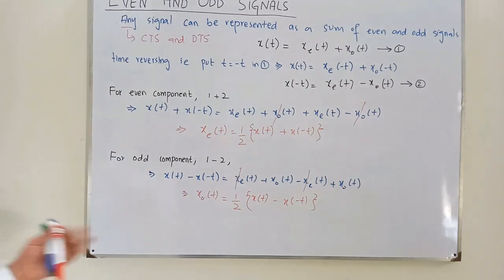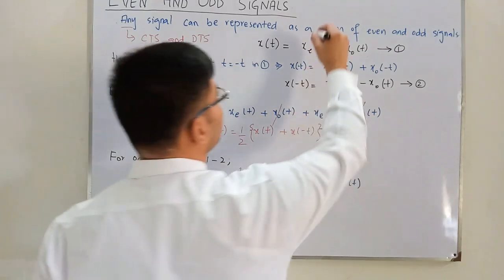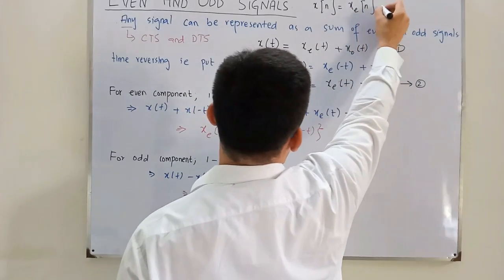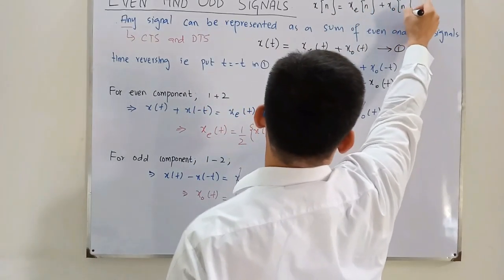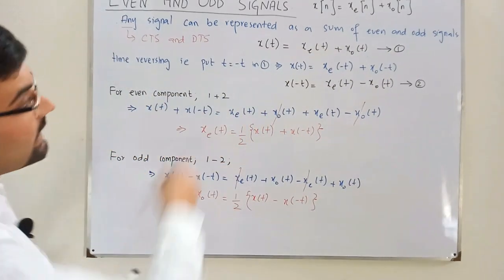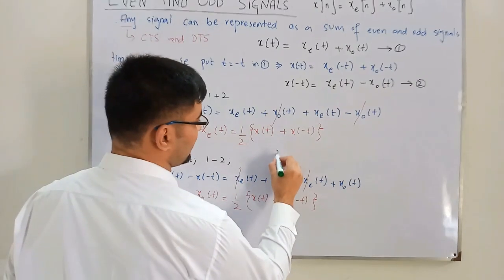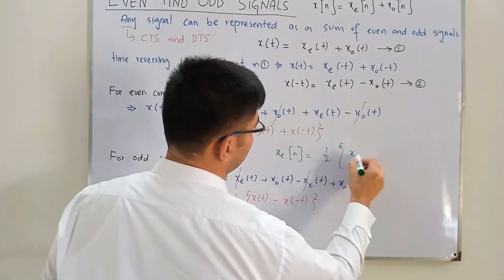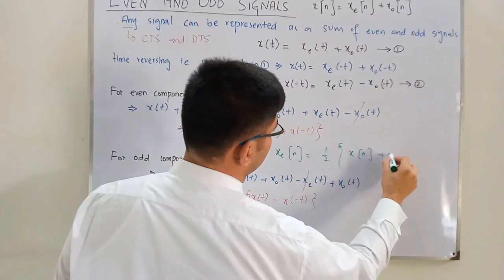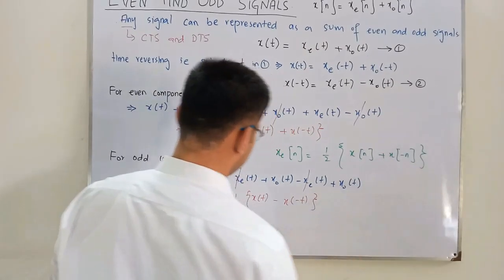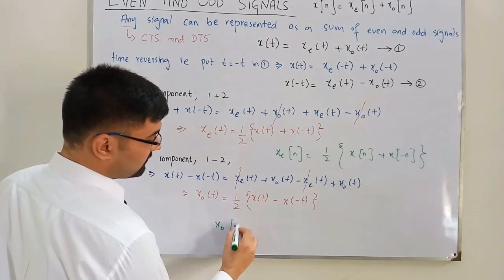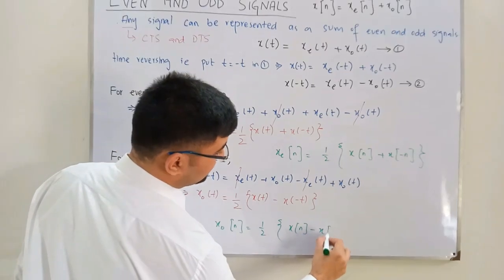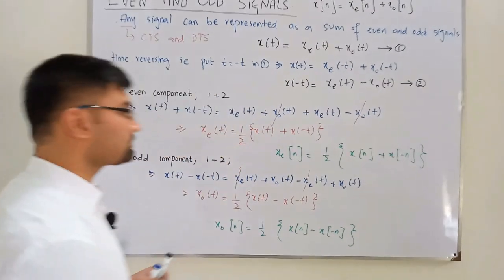Similarly for the discrete time signal, the derivations follow the same way. The even component is: x_even[n] = (1/2)[x[n] + x[-n]], and the odd component is: x_odd[n] = (1/2)[x[n] - x[-n]].